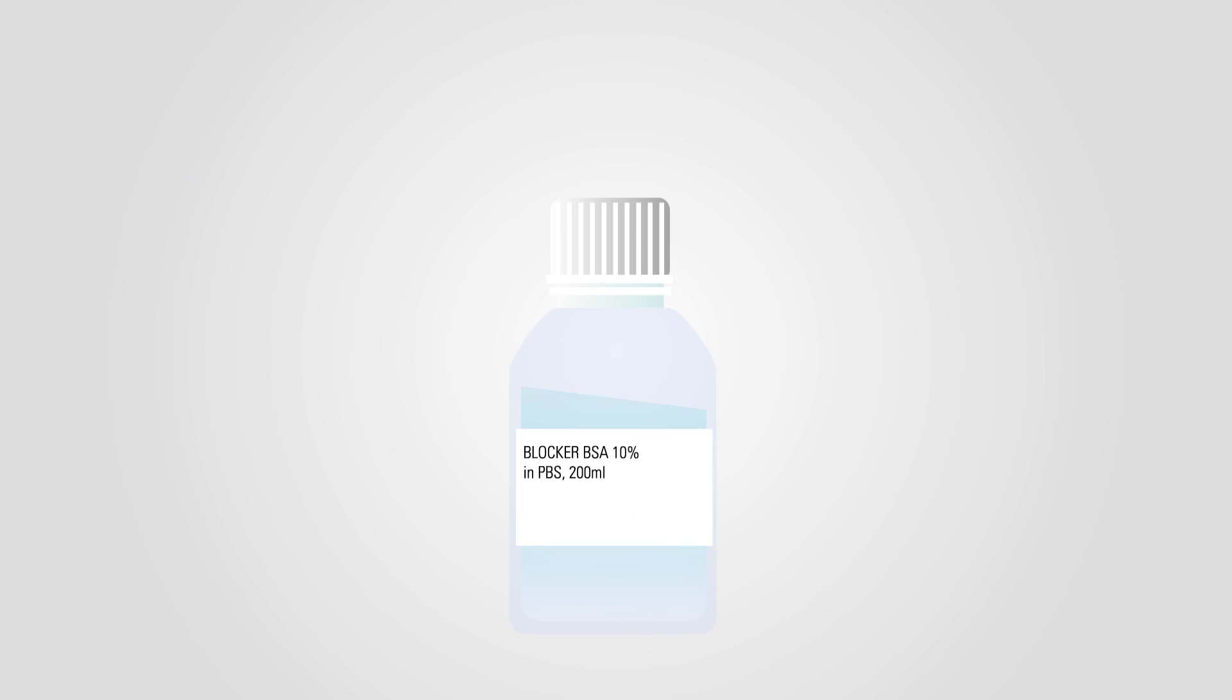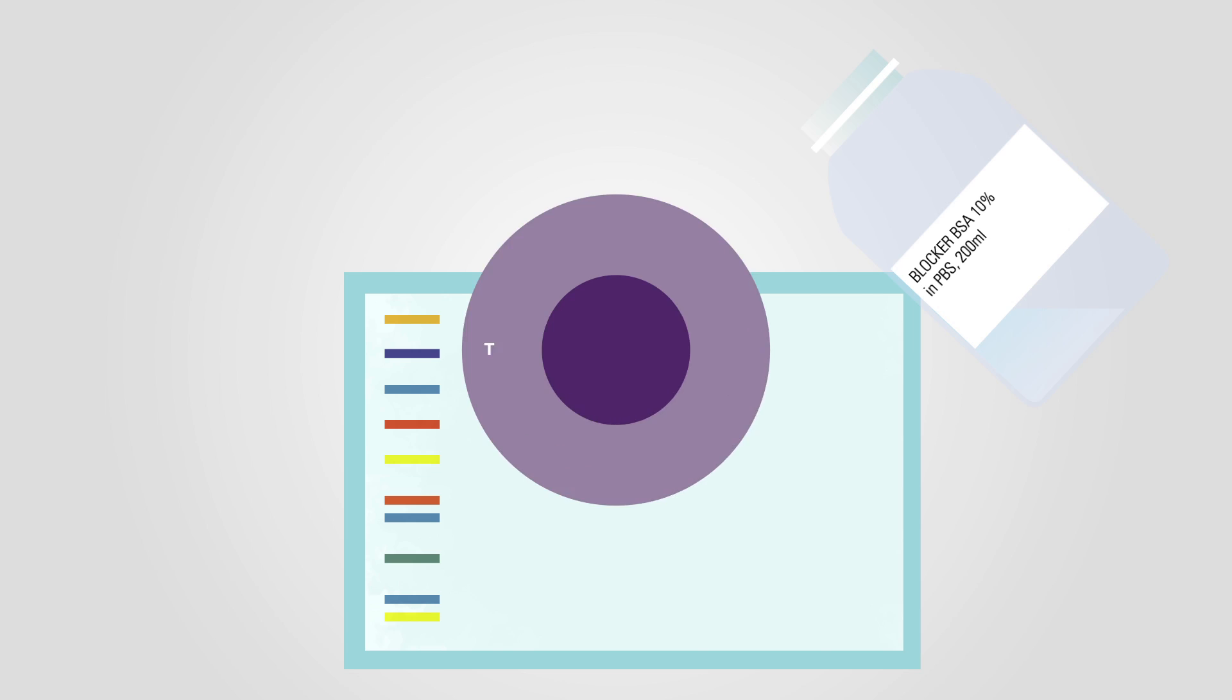Block the membrane in BSA when running a Western blot of phosphorylated proteins. A milk-based blocking buffer is not suited for the Western blot of a phosphorylated protein as it contains casein, a phosphorylated protein, as well as a high level of phosphatases that can cleave the phosphate off of the target protein.